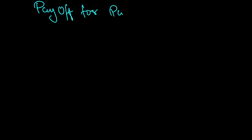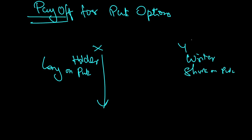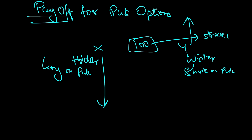Now, payoff for put options. The payoff is the calculation of net profit and loss. Before showing it graphically, let me take a quick example. X is the holder who believes the price will come down — he is long on put. Y is the writer — short on put, expecting the price to go up. They enter a contract with strike price 100 and the holder pays a premium of 10.